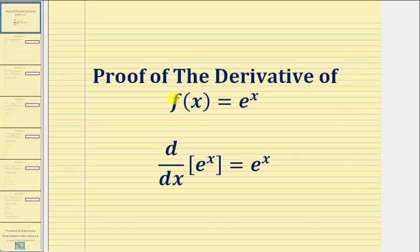Welcome to a proof using implicit differentiation that the derivative of e to the x with respect to x equals e to the x. This means f of x equals e to the x is its own derivative.